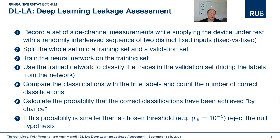The procedure looks like this. First, we record a set of side-channel measurements while supplying the device under test with a randomly interleaved sequence of two distinct fixed inputs. Then we split the whole set into a training set and a validation set and train the neural network on the training set. Afterwards, we use the trained network to classify the traces in the validation set while hiding the true labels from the network. We then compare the classifications with the true labels and count the number of correct classifications. We can calculate the probability that the correct classifications could have been achieved just by chance, and if this probability is smaller than a chosen threshold, for example the typical 10 to the power of minus 5 threshold in leakage assessment, then we can reject the null hypothesis. The number of traces for the detection is then the cardinality of the training set only, because this set was sufficient to extract and learn a generalizable feature from the traces.